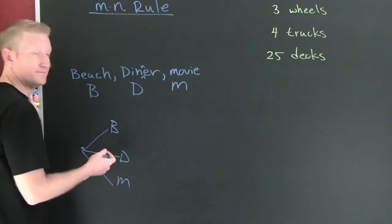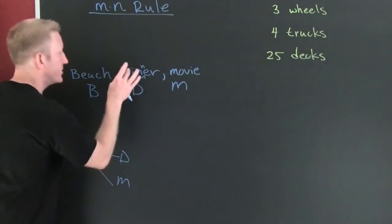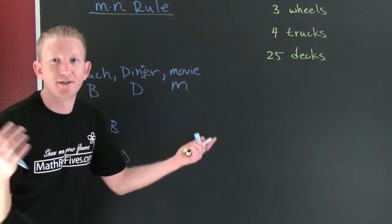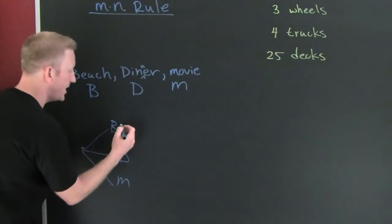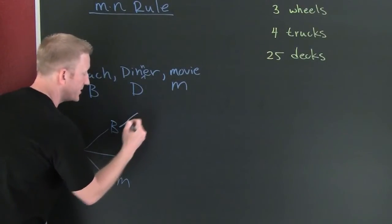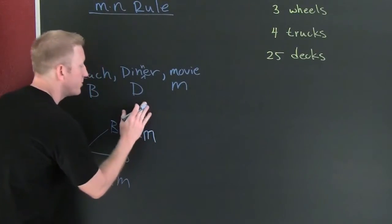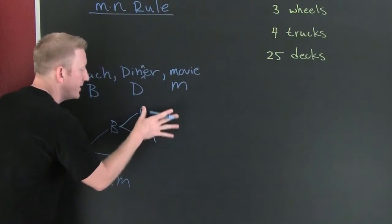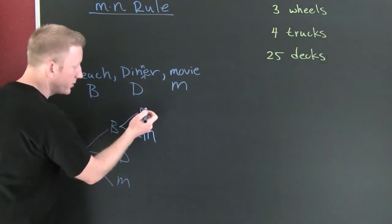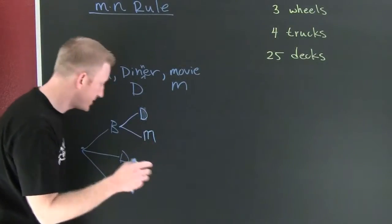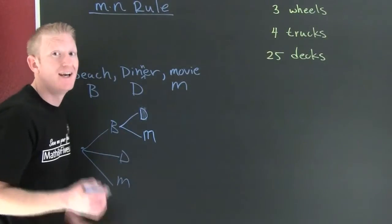So maybe you go to the beach first. If you go to the beach first, then you can go to dinner or a movie, because your choice for the first part has already been made. From the beach, you can go to dinner or a movie — here you have two choices. On the first stage, you had three choices.